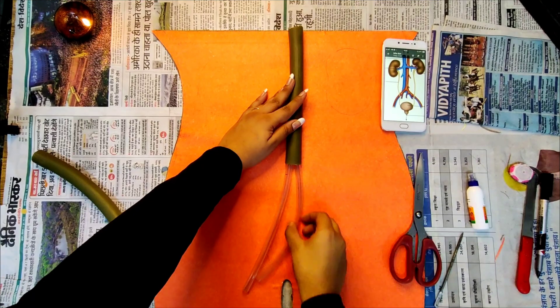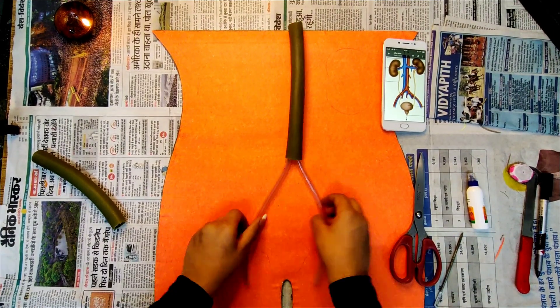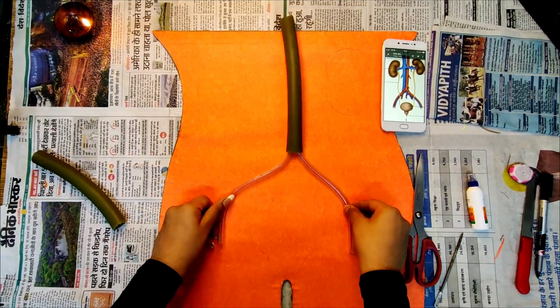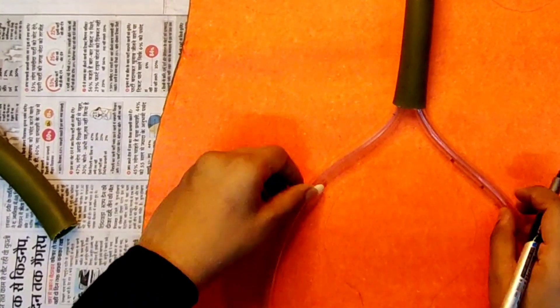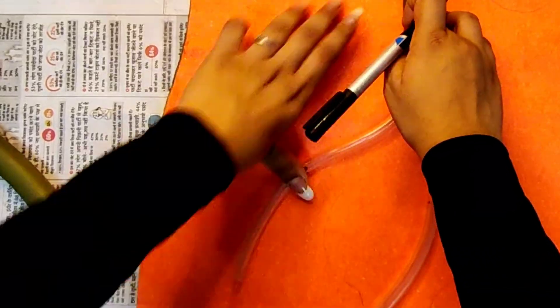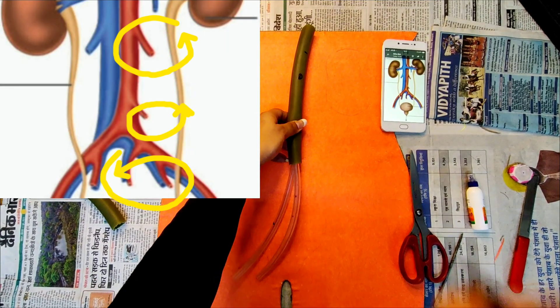I've taken a transparent pipe and cut this out in two parts, then I've inserted this particular pipe in the thicker pipe. Now I'm marking some holes in the thin transparent pipe so that the particular portions which you can see in the image are coming out.